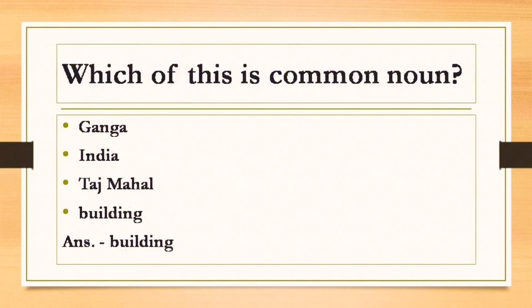Question number 4: Which of this is common noun? What is common noun, children? It is a general name given to a noun. Let's see the options: Ganga, it is proper noun. India, it is also proper noun. Taj Mahal, it is proper noun. Number D is building, and it is common noun. You can see Ganga, India, and Taj Mahal are written with capital letters, and building is written with a small letter, so it is common noun.